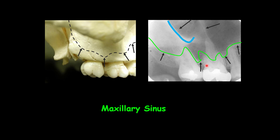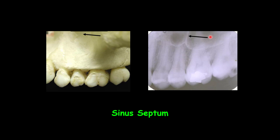You can also see the zygomatic process of the maxillary bone, which we'll discuss shortly, and the sinus septum. Often one or several radiopaque lines are seen in the image of the maxillary sinus. These opaque lines are called septa — thin folds of cortical bone that project a few millimeters from the wall of the sinus. You can see the maxillary sinus floor and the maxillary septa here.